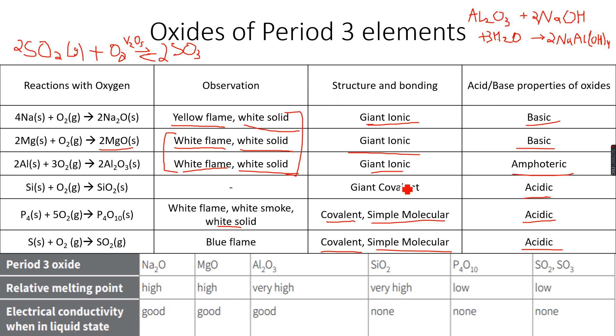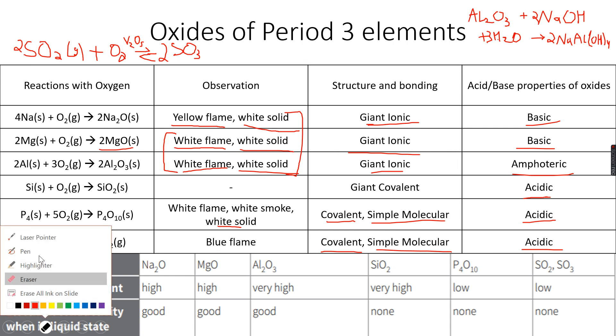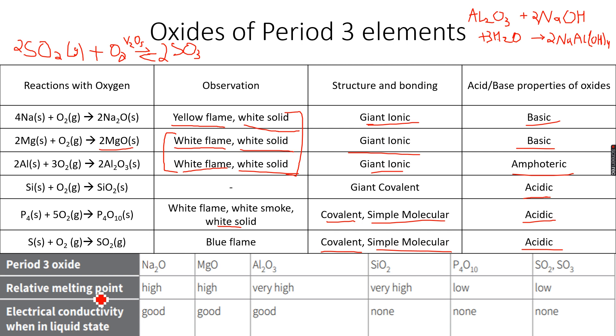Now the last part we have to do is the relative melting points and electrical conductivities of these oxides. Na2O melting points from Na2O to SiO2 are very high because of ionic bonding and giant covalent structure. For P4O10, SO2, and SO3, they are low because of the simple molecular structure, because the van der Waals forces are easy to break.